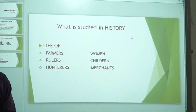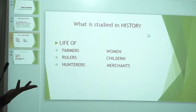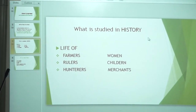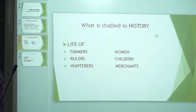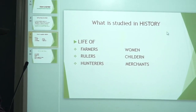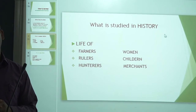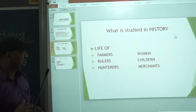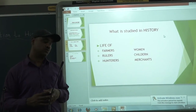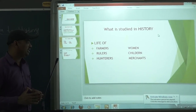Another type studied is rulers — without rulers, history cannot be complete. If you open any textbook, you will find different rulers: kings and queens. How they used to spend their life and how they used to conquer areas is studied in history. Then there are hunters — people who were dependent on hunting animals. Their life was unsettled. They used to travel behind animals and hunt them. The problems they faced are all studied in history.